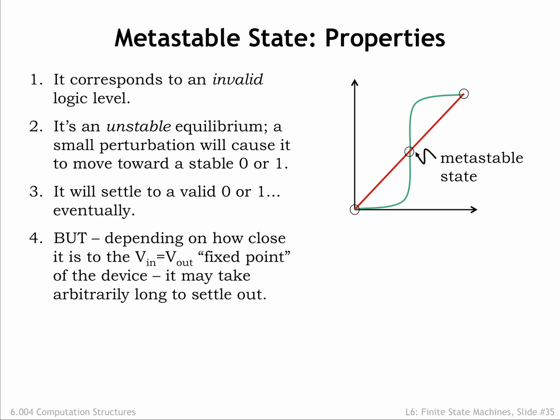The time it takes for the system to evolve to a stable equilibrium is related to how close Q's voltage was to the metastable point when the positive feedback loop was enabled. The closer Q's initial voltage is to the metastable voltage, the longer it will take for the system to resolve the metastability.